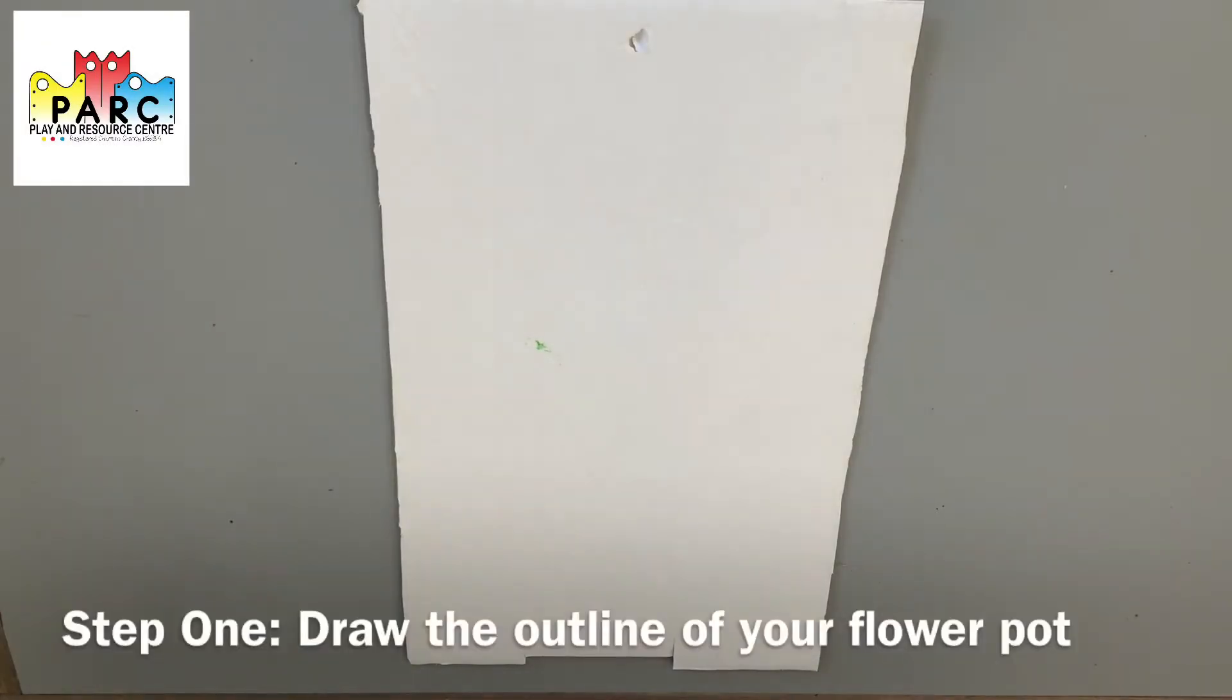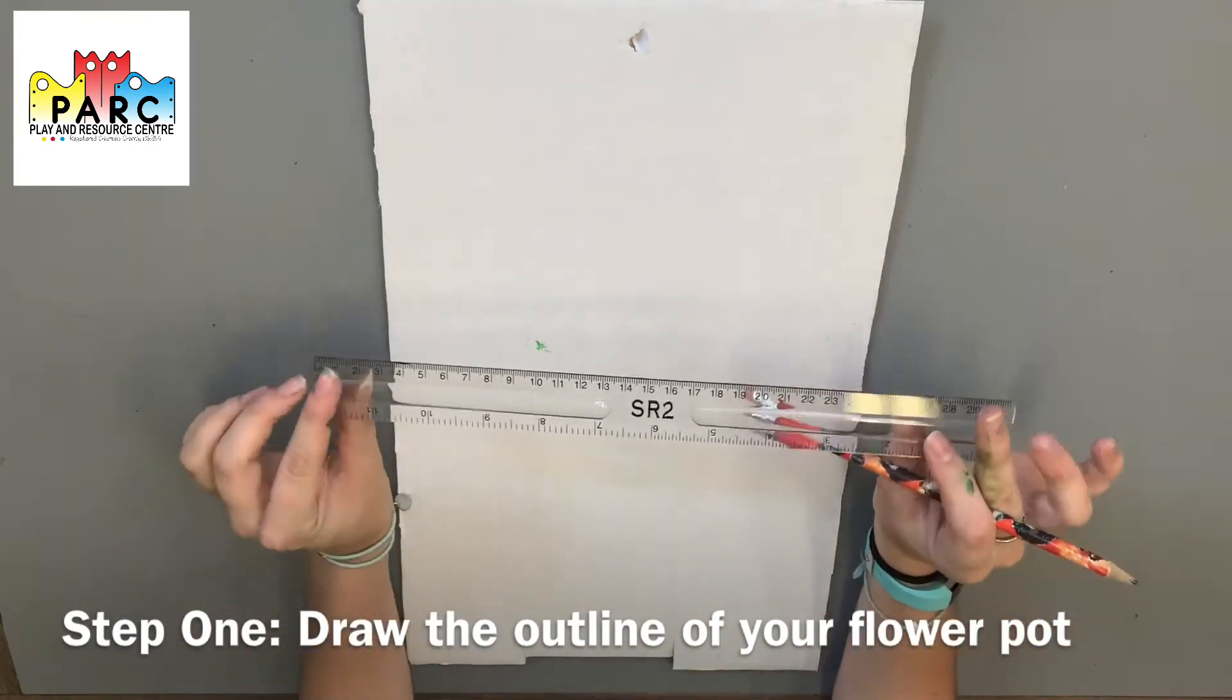So the first step to make your very own flower pot is to draw the outline of your pot. I'm going to start off using a pencil and then I'll go over the outline in pen afterwards. And I'm also going to use a ruler to make it nice and straight, but you don't need to.